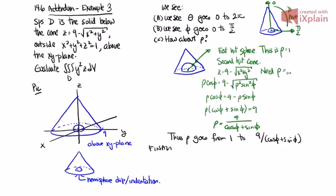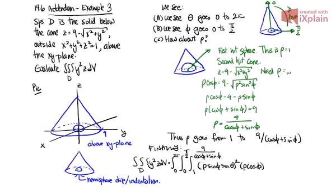So finally we can finish up. We can see that the integral over D of y squared z dV, this will be long and messy. This is 0 to 2π, then we have 0 to π over 2, we have these icky ones, we have from 1 to 9 over cosine phi plus sine phi. Then we have the y squared z. So y we know is rho sine phi sine theta, that's squared. The z we know, the z is rho cosine phi. Then we have the Jacobian, that's the rho squared sine phi. Then we have d rho d phi d theta.